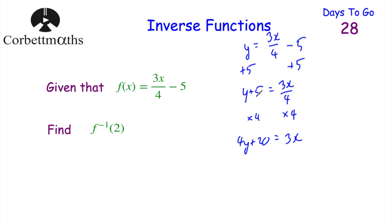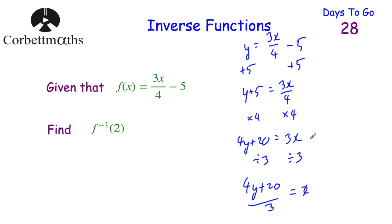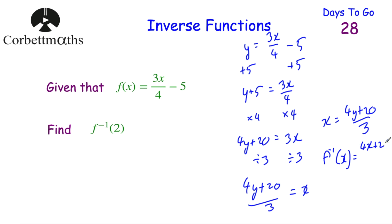Now multiply both sides by 4: 4(y + 5) = 4y + 20 = 3x. Then divide both sides by 3: (4y + 20)/3 = x. So x = (4y + 20)/3. Replacing y with x gives us f⁻¹(x) = (4x + 20)/3.